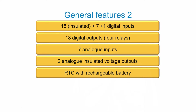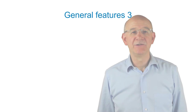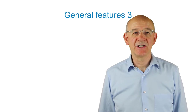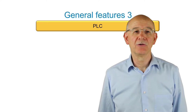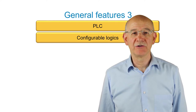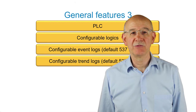The GC600 features a real-time clock with rechargeable battery, a 4.3-inch TFT color display, an embedded PLC, configurable logics, configurable event logs, and configurable trend logs.